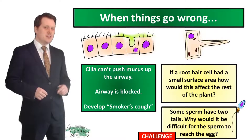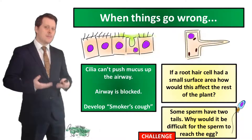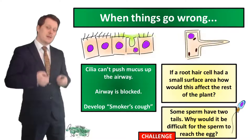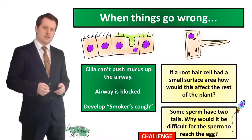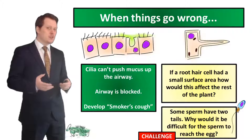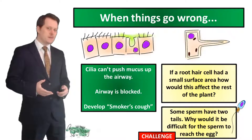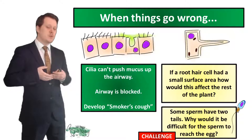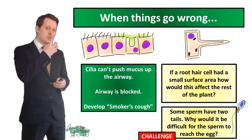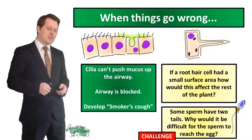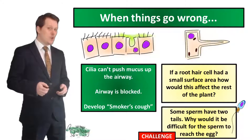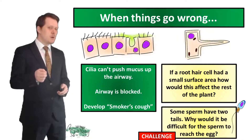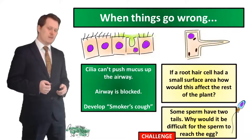When the cilia are paralyzed they can't push mucus up the airway, which means the airway becomes blocked and the person will develop a smoker's cough. This cough forces the mucus up the windpipe to the top of the throat. Also, when these cells are paralyzed they are no longer removing disease-causing microorganisms, which means people who smoke are more likely to get respiratory infections.